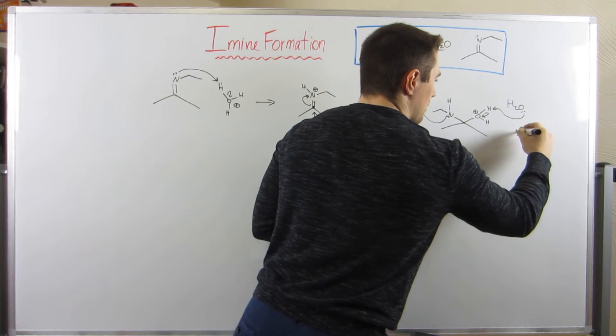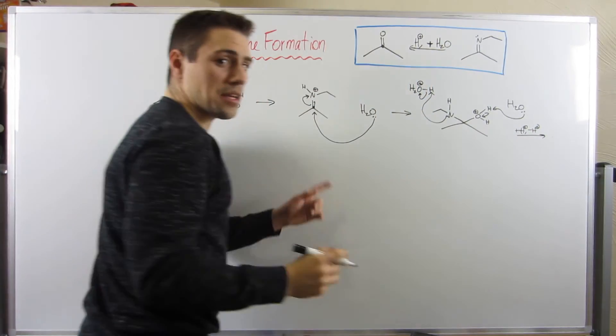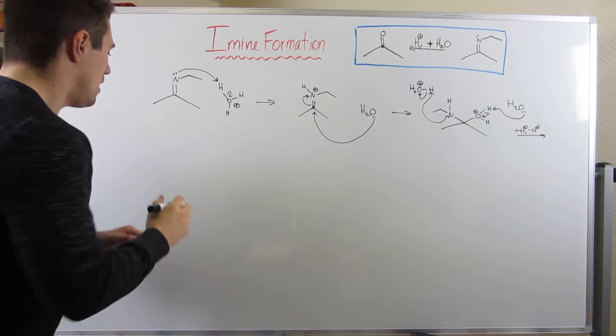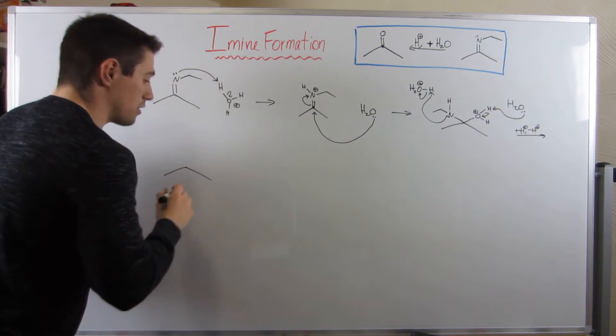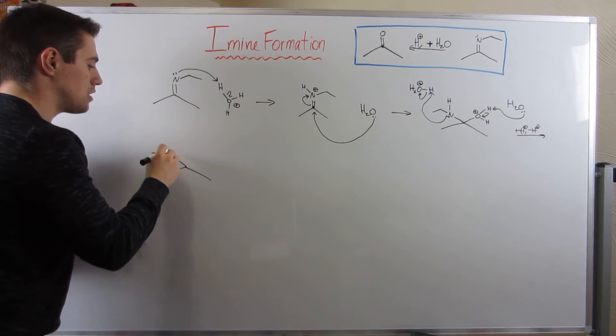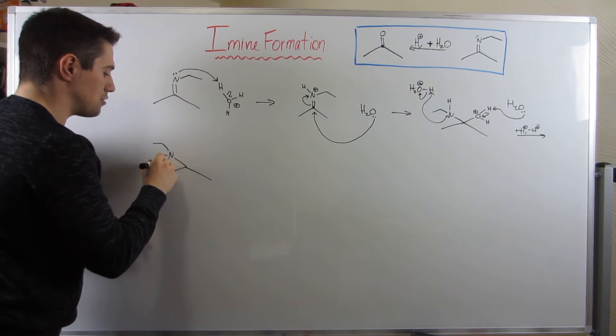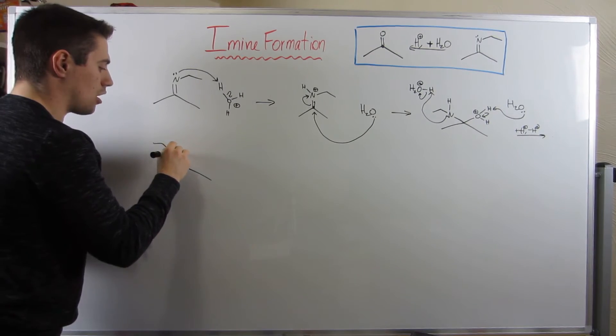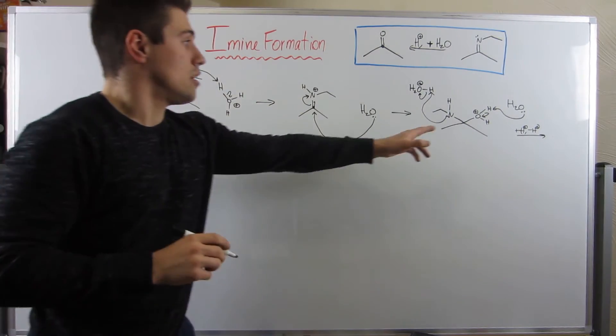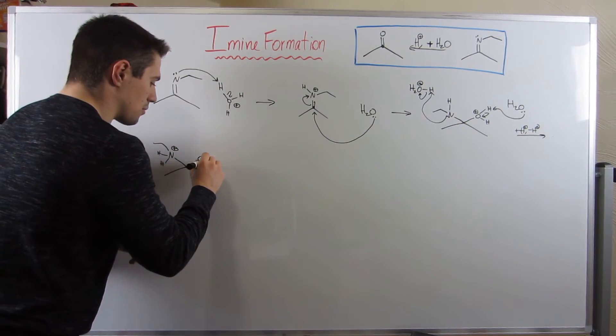Again, remember, that's that plus H plus minus H plus step, the classic proton shuffle. So let's see how this electron flow ends up. To the left, we have a nitrogen, the ethyl group, and we have two hydrogens attached and a plus charge. On the other hand, we have just an OH.